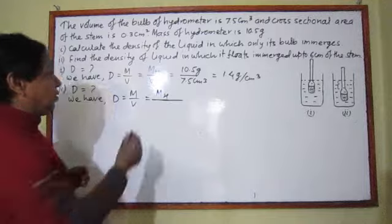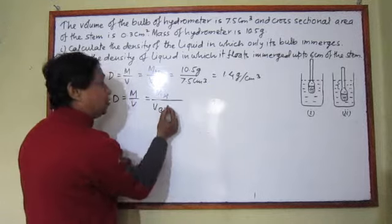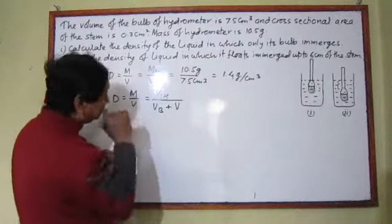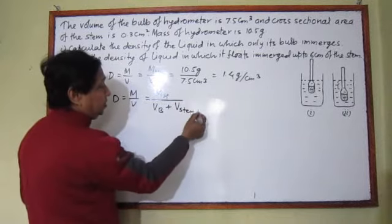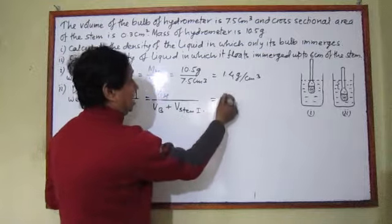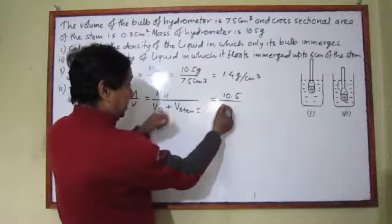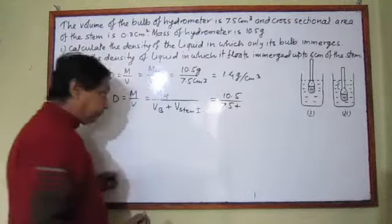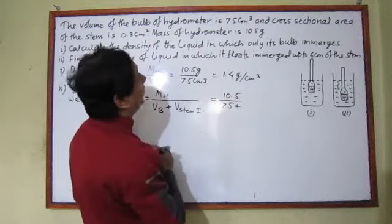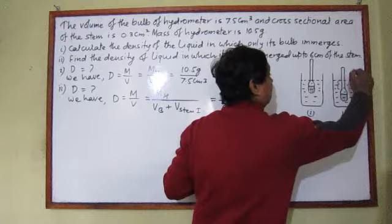But the volume of displaced liquid is now equal to the volume of the bulb plus the volume of the stem immersed. The volume of the stem immersed can be calculated from the two given values. The cross-sectional area of the stem is given — when we cross-section the stem and view from above, we see the circular cross-section. Cross-sectional area multiplied by height gives the volume of the immersed part of the stem.